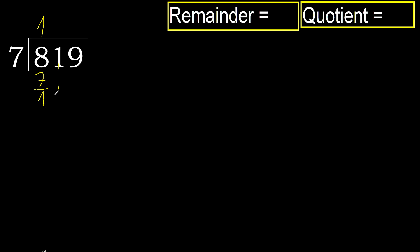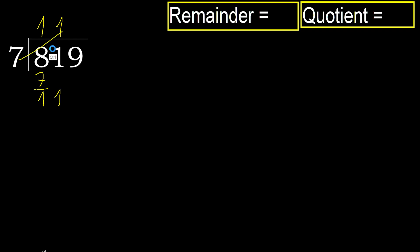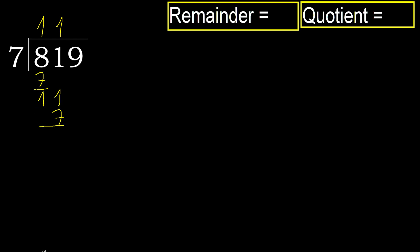Next: 11. 7 multiplied by 2 is 14 — 14 is greater. Multiply by 1: 7 is not greater. Subtract: 11 minus 7 is 4.